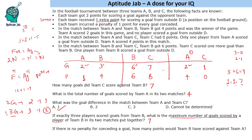If there were no penalty for conceding a goal, how many points would team B have scored against team A? Team B scored four points against A, but lost two points from conceding two goals. Without the penalty, they would have scored six points instead of four. This was the solution to the set — I hope you found it interesting, slightly different in terms of scorelines.